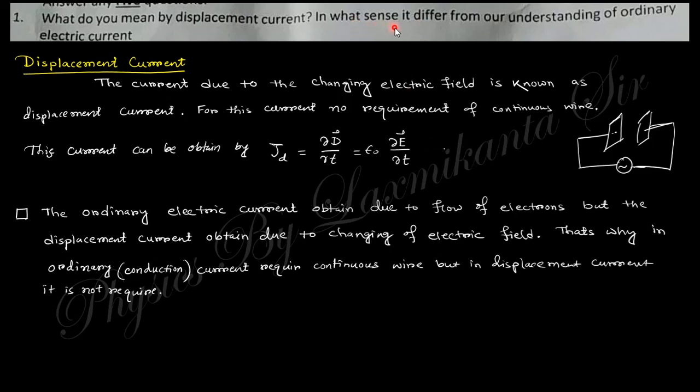In what sense does it differ from ordinary electric current? In ordinary electric current, the current exists due to the flow of electrons. When there is a flow of electrons, they produce ordinary current, but when there is a change in electric field, it produces displacement current. That is the basic difference between displacement current and ordinary electric current.